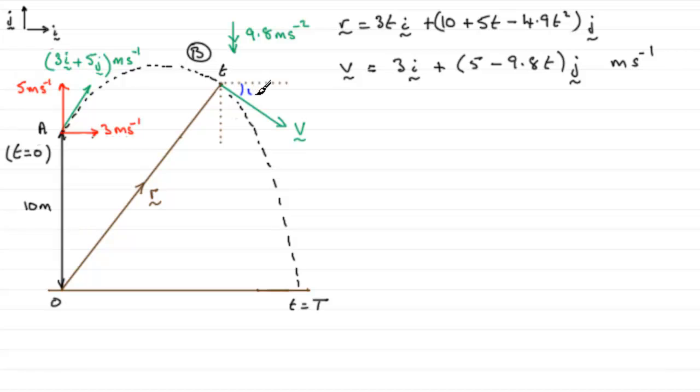We'll just mark it in as 45 degrees. That would make this angle in here also 45 degrees. Now what do we know about the components of V at this point B? Well, we know that this component is going to be 3 meters per second, because we worked out the velocity vector from the previous part of the question.